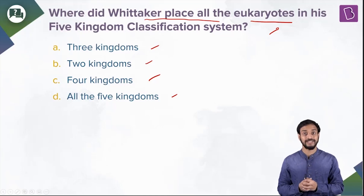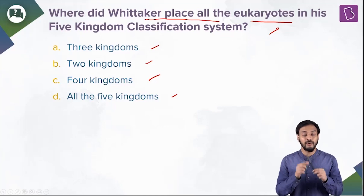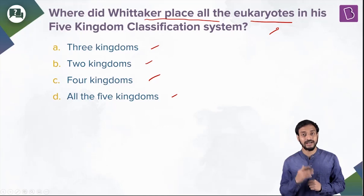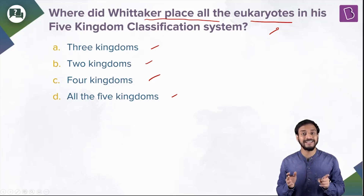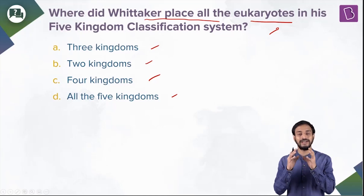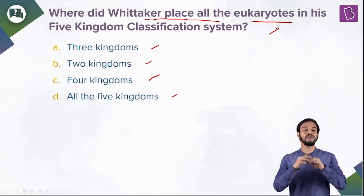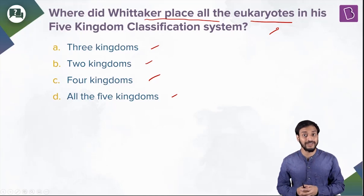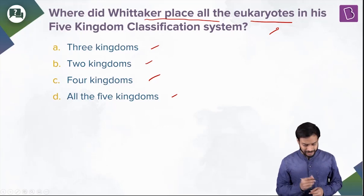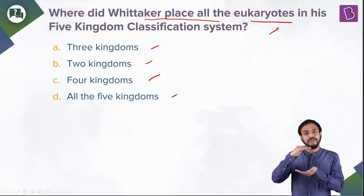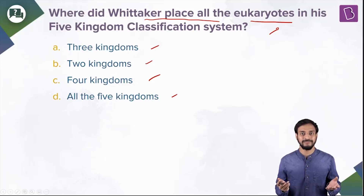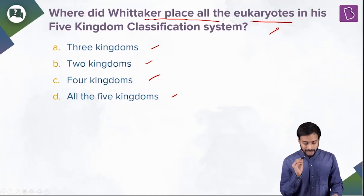Talking about the cellular structure — prokaryotes and eukaryotes. Monera are the prokaryotes; they are unicellular. After that, Protista — they are also unicellular but they are eukaryotes, not prokaryotes. They have a well-defined membrane-bound nucleus, whereas prokaryotes do not. So from Protista, all other four kingdoms are eukaryotes. The answer is the fourth option — four kingdoms.